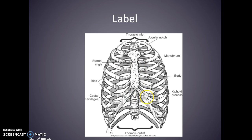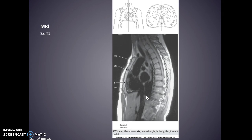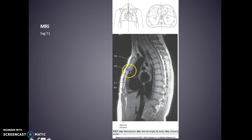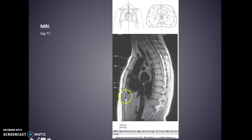Here is a sagittal MRI T1. We have your manubrium and your sternal angle with the body, and at the bottom here is your thoracic outlet and your xiphoid process — you can see just the tip of it there.